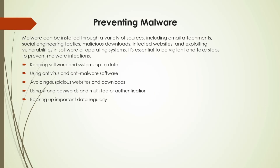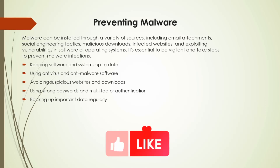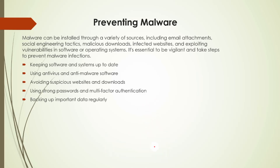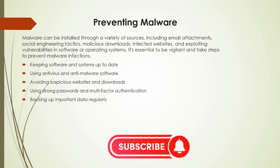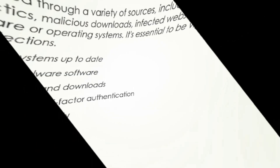Malware can be installed through a variety of sources, including email attachments, social engineering tactics, malicious downloads, infected websites, and exploiting vulnerabilities in software or operating systems. It's essential to be vigilant and take steps to prevent malware infections: keeping software and systems up to date, using antivirus and anti-malware software, avoiding suspicious websites and downloads, using strong passwords and multi-factor authentication, and backing up important data regularly.